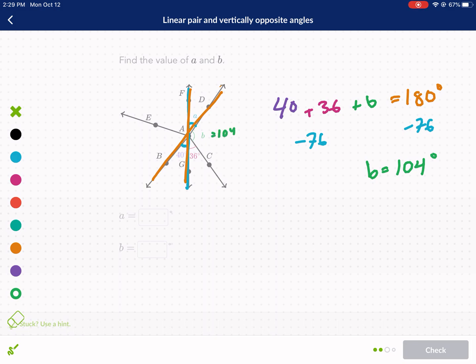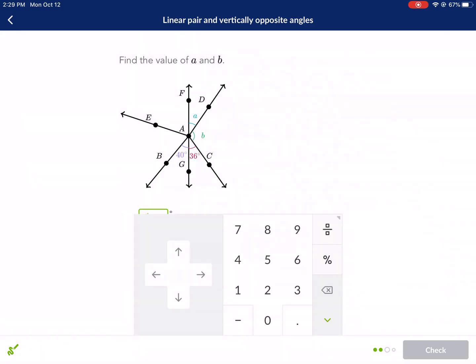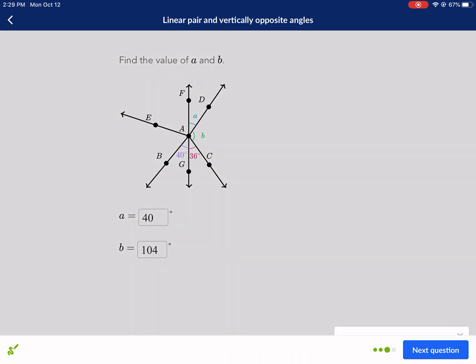And if those are opposite, then that means A is vertical with 40. So A is going to be 40 and then 104. So 40, 104. Let's see if this gives us the chime. It does.